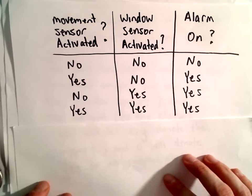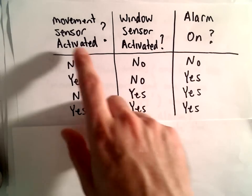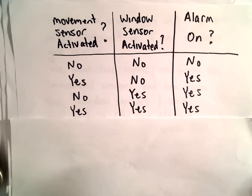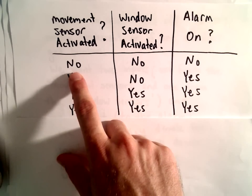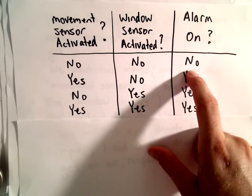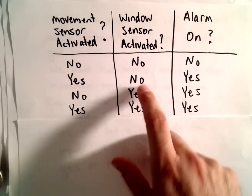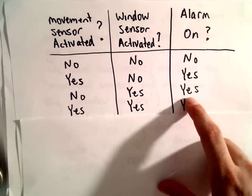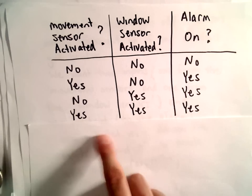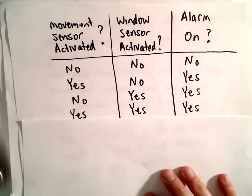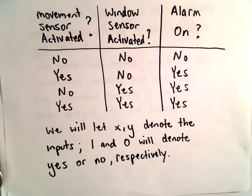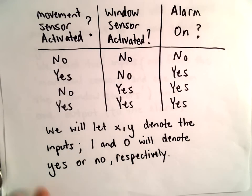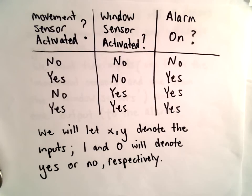Here's a little table summarizing what we'd like to happen. The first column answers yes or no: has the movement sensor been activated? The second column covers the window sensor, and the last column asks: is the alarm on? If neither sensor is activated, we don't want the alarm on. But for everything else — movement only, window broken only, or both — we want the alarm on. We'll let x and y denote the inputs, with one for yes and zero for no.